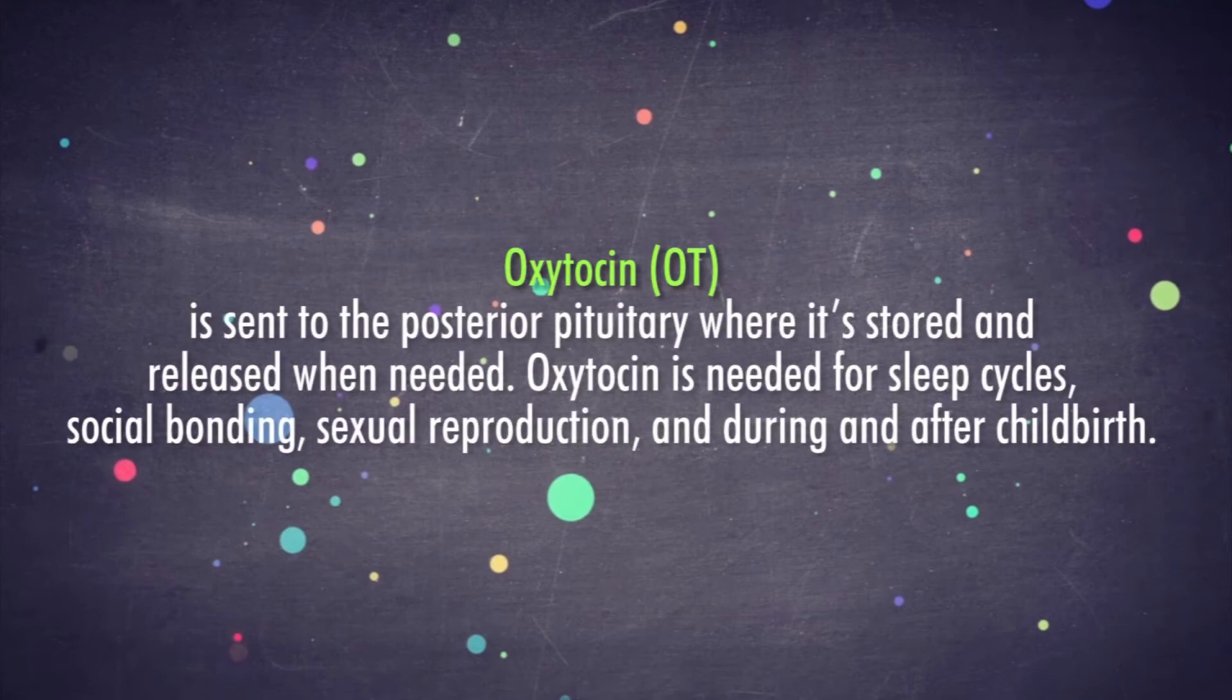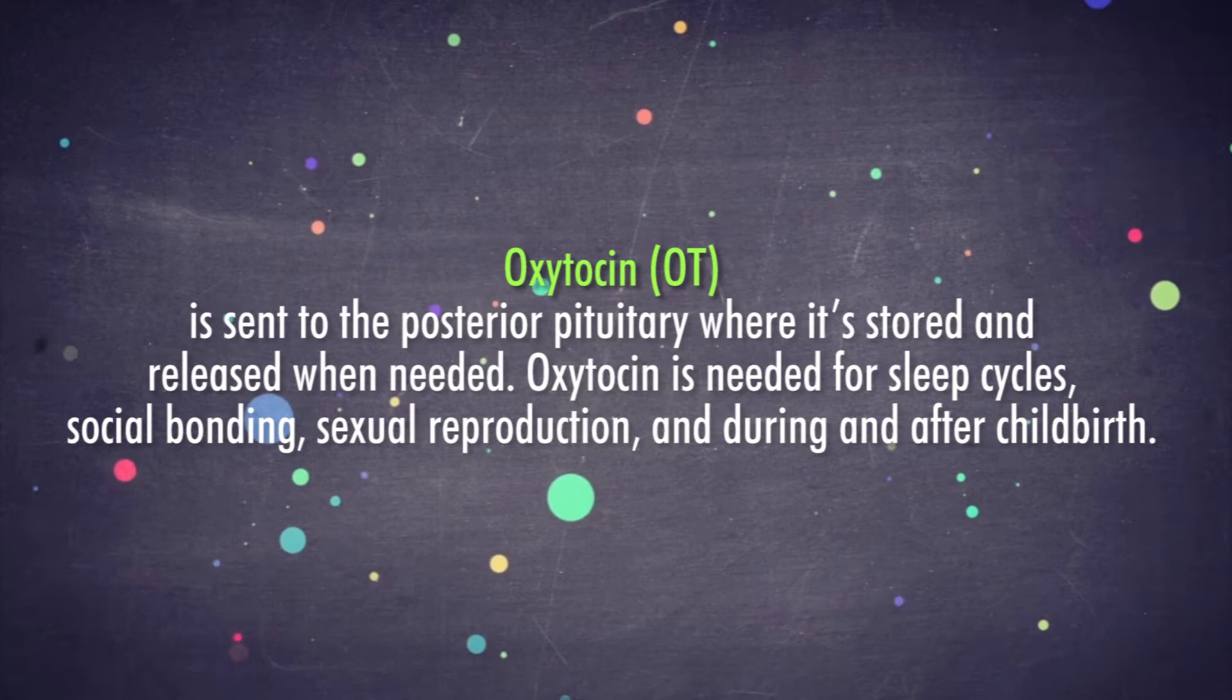Oxytocin, OT, is sent to the posterior pituitary where it's stored and released when needed. Oxytocin is needed for sleep cycles, social bonding, sexual reproduction, and during and after childbirth.